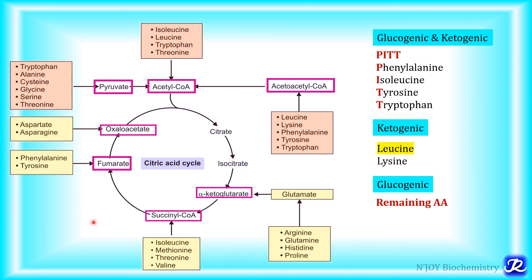Depending on the point at which carbon from an amino acid enters the TCA cycle and other central metabolic pathways, amino acids are categorized as glucogenic or ketogenic. Glucogenic amino acids are those whose carbon skeleton is degraded to pyruvate or one of the TCA cycle intermediates — like alpha-ketoglutarate, succinyl-CoA, fumarate, or oxaloacetate — and these intermediates are capable of forming glucose through gluconeogenesis.